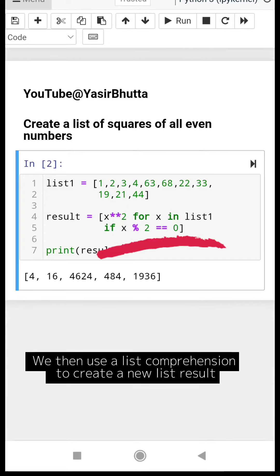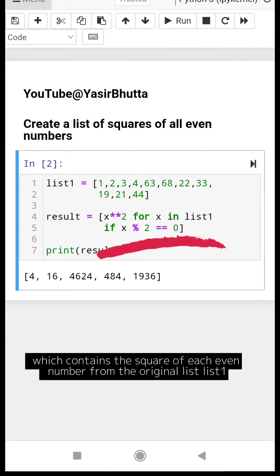We then use a list comprehension to create a new list result, which contains the square of each even number from the original list list1.